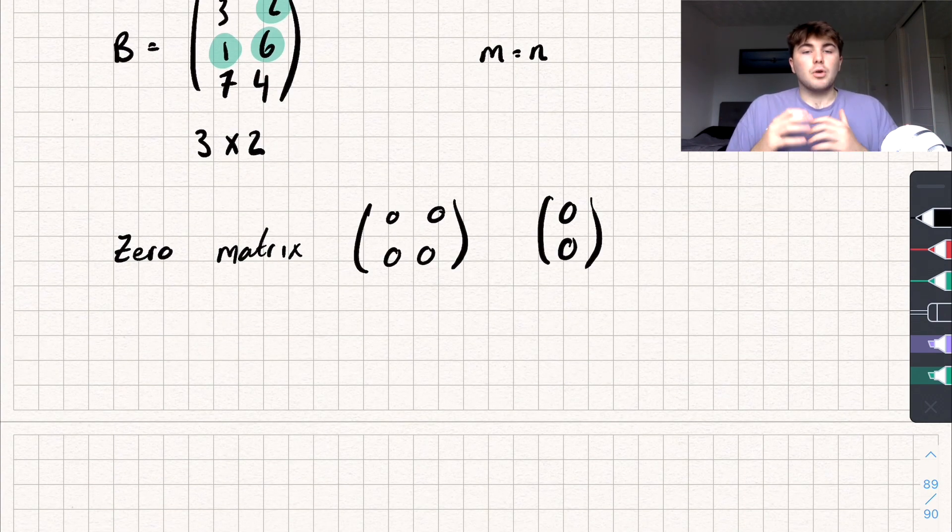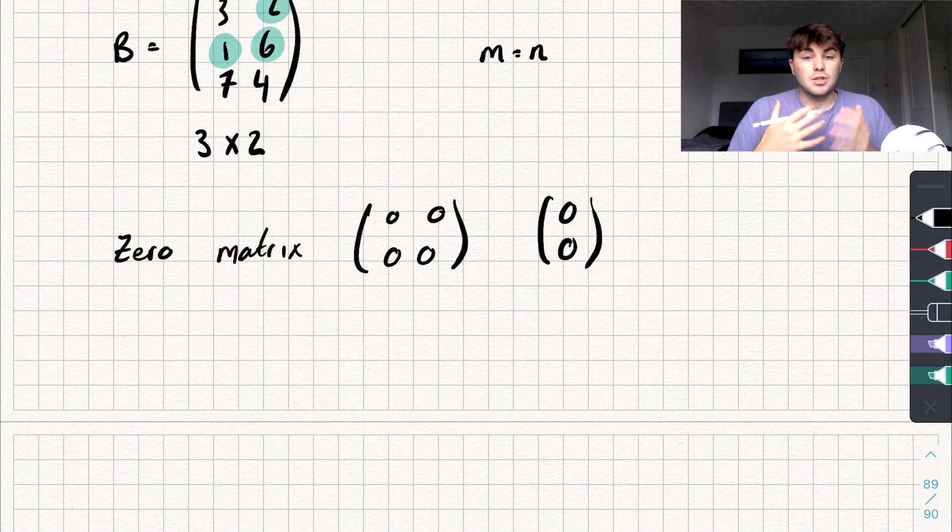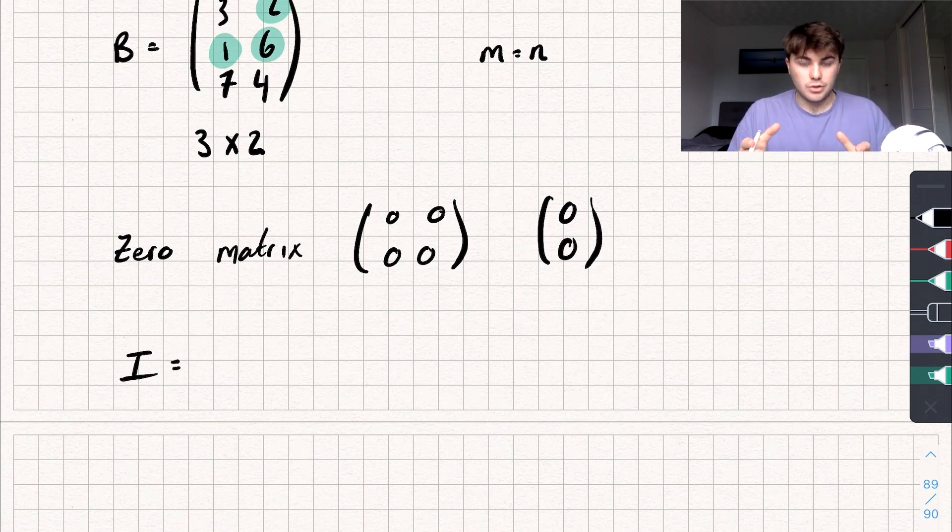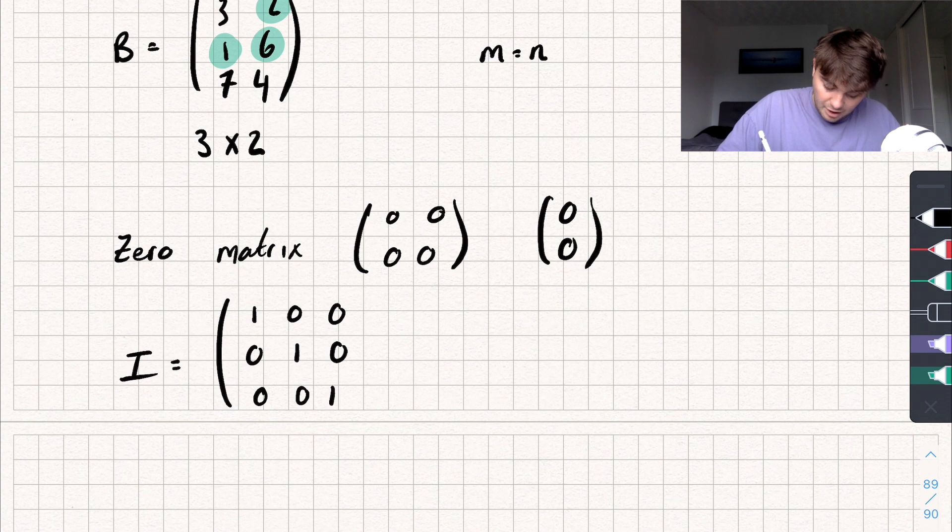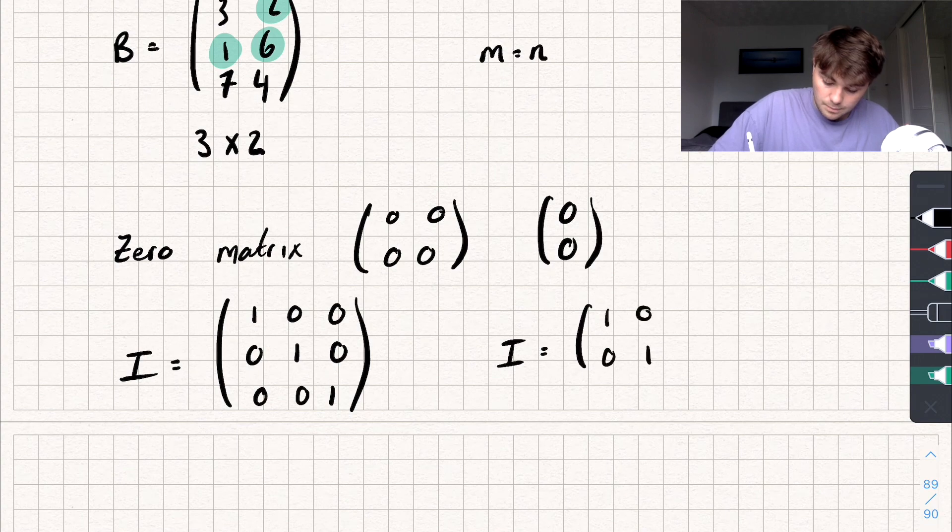And finally, I'm not going to talk too much about this now, but we also have something called an identity matrix, which would look something like this. It's usually given a capital I, and this is always a square matrix. Okay. So the number of rows is going to equal the number of columns. And we have ones, say we have a three by three square matrix. We have ones going down the diagonal like this, or a two by two square matrix or identity matrix might look like this. So we have ones going down the diagonal and zero for all other entries.